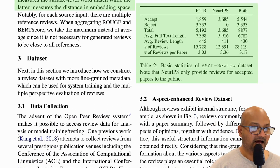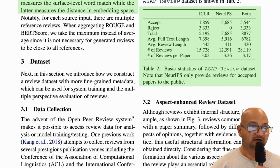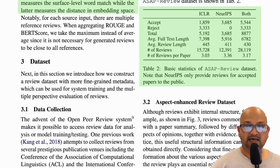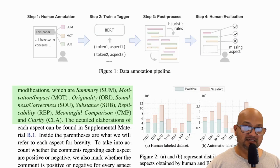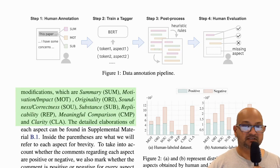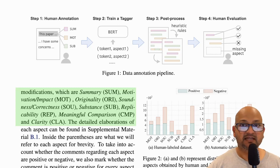One of the first things to ask about any paper that tries to train a model is what the dataset is. The authors found a dataset of reviews from two prestigious machine learning conferences, ICLR and NeurIPS. The dataset has almost 9,000 papers — about 5,500 were accepted and the rest were rejected. NeurIPS only provides reviews for accepted papers. The next step was to have these reviews annotated by humans, who tagged parts of the review as summaries, motivation, impact, and so on. It was this annotated review dataset that was then used to train a model.